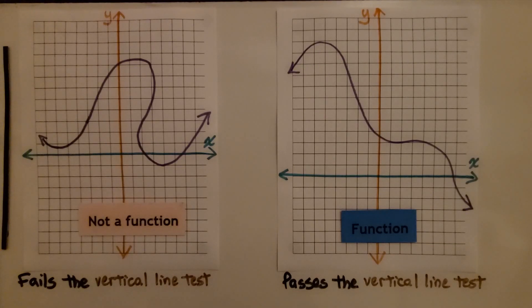Here we have two graphs, and we're going to see if they pass the vertical line test. Remember, the test is used to see if a vertical line drawn through the graph of the function passes through it only one time.